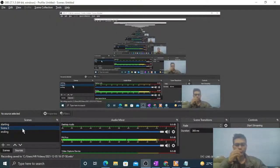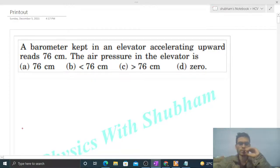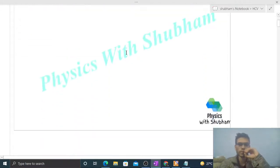Okay, hi everyone. Today let's discuss one interesting problem. It says a barometer kept in an elevator accelerating upward reads 76 centimeter. The air pressure in the elevator is... so we have an elevator here.